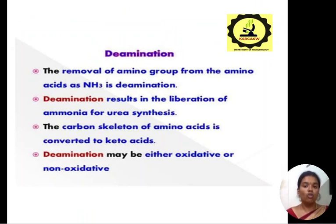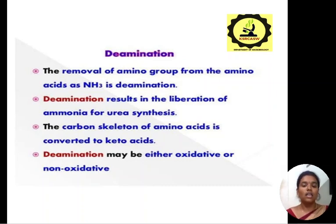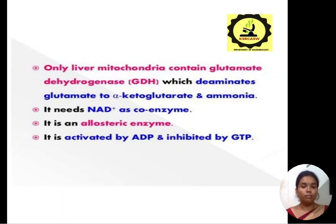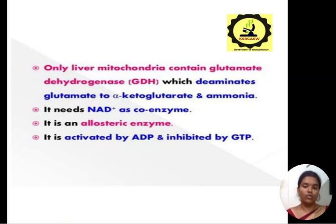Deamination is the removal of an amino group from an amino acid as NH3. Deamination results in the liberation of ammonia for urea synthesis. The carbon skeleton of the amino acids is converted to keto acids. Deamination may be either oxidative or non-oxidative. Only liver mitochondria contain glutamate dehydrogenase, which deaminates glutamate to alpha-ketoglutarate and ammonia. This enzyme requires NAD or NADP as coenzymes and also acts as an allosteric enzyme, activated by ADP and inhibited by GTP.